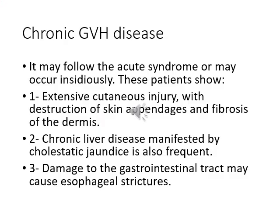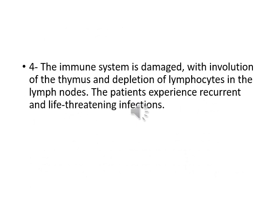In cases of chronic graft-versus-host disease, it may follow an acute syndrome or may occur insidiously with a chronic course. Patients show extensive cutaneous injury with destruction of skin appendages and fibrosis of the dermis. Sometimes chronic liver disease may manifest as cholestatic jaundice. Damage of the gastrointestinal tract may cause esophageal stricture or stricture in any part of the GI tract. Also, the immune system may be damaged with involution of the thymus and depletion of lymphocytes in the lymph nodes, leading to recurrent and life-threatening infections.